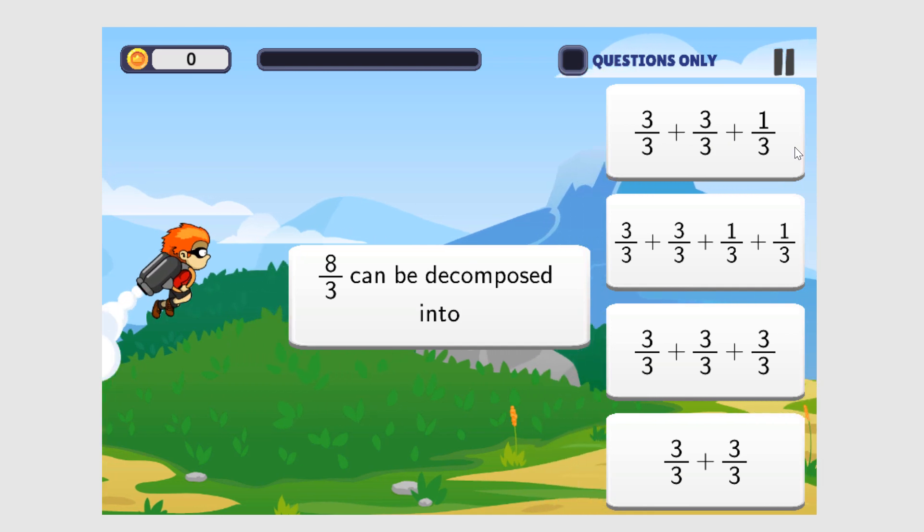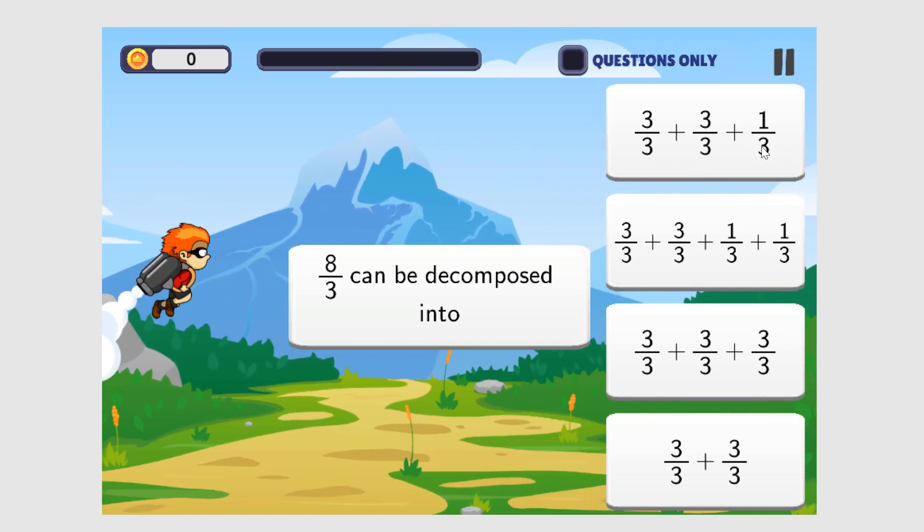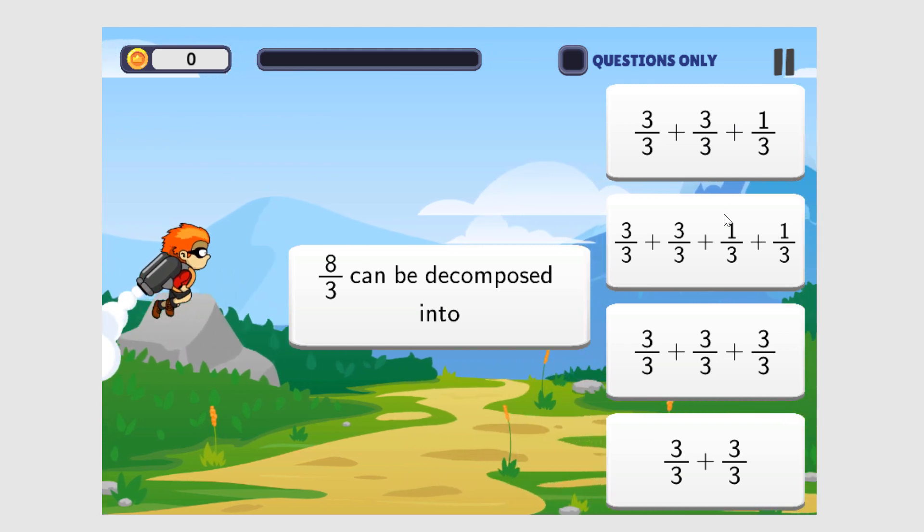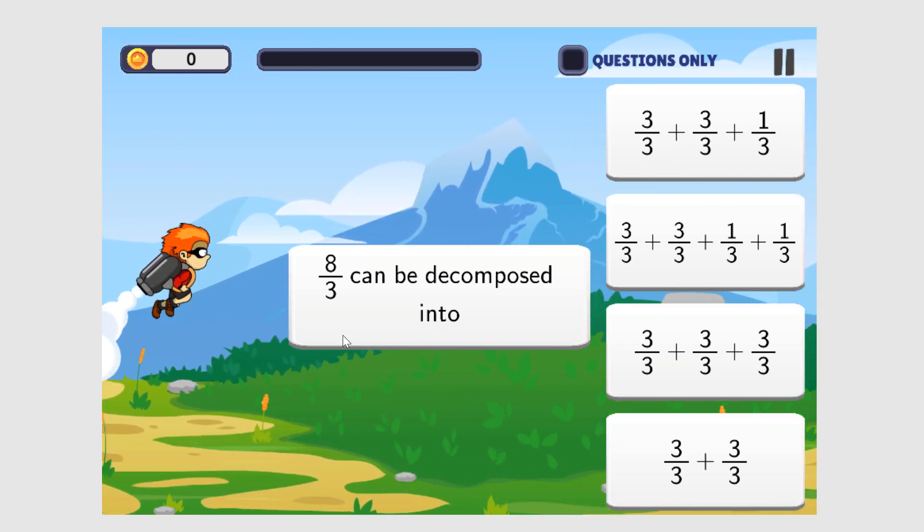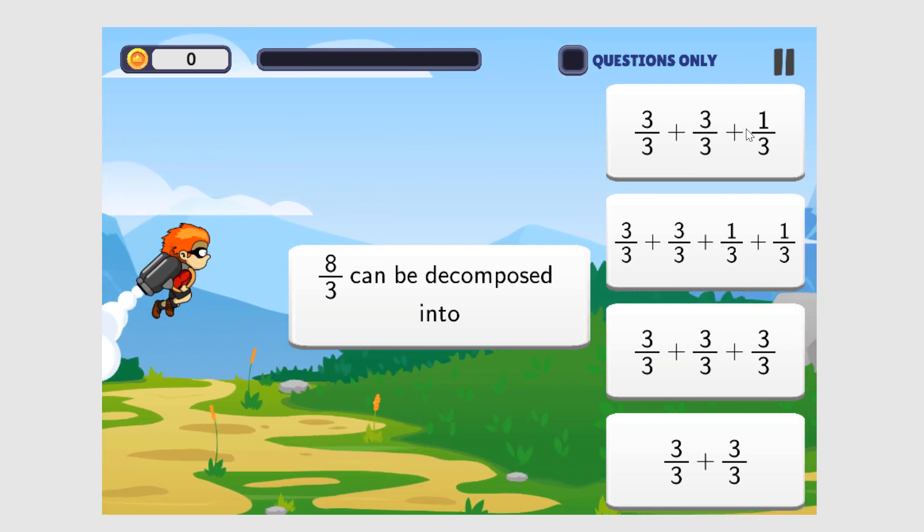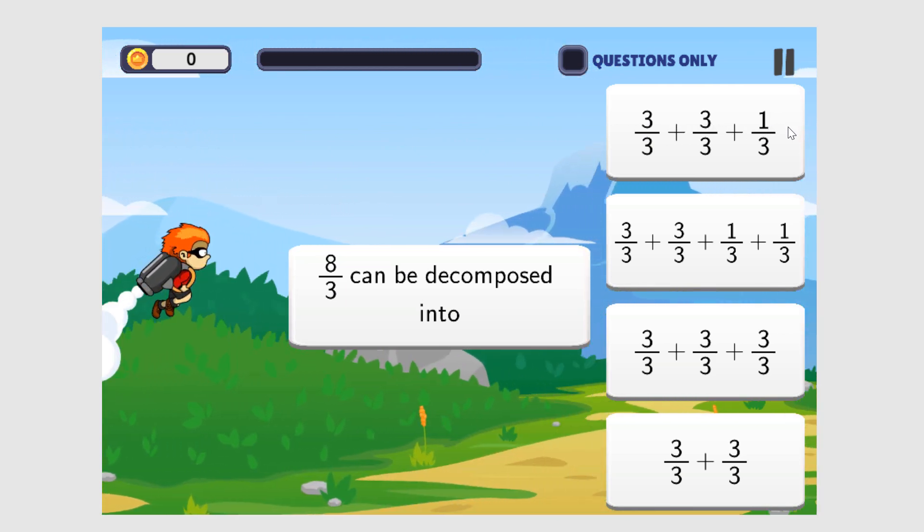Now, if you remember, when we add fractions, we keep the denominator the same and we only add the numerators. So let's go through these answers and see which one is equal to eight-thirds. Three plus three is six plus one is seven, so the answer here is seven-thirds.